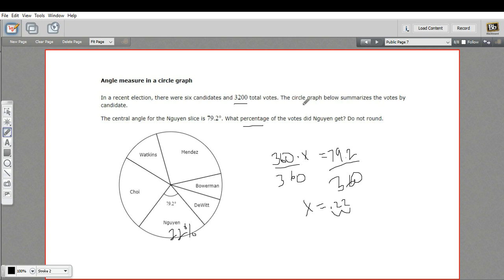And if you were asked how many votes did this person get, you could take 22% of the total and find out the number of votes. So that is a little bit of work with angle measures in circle graphs.